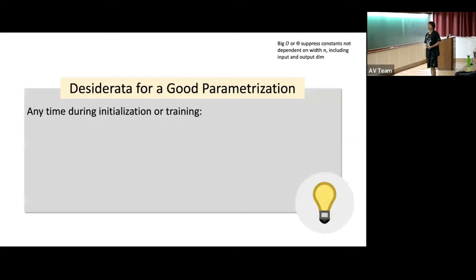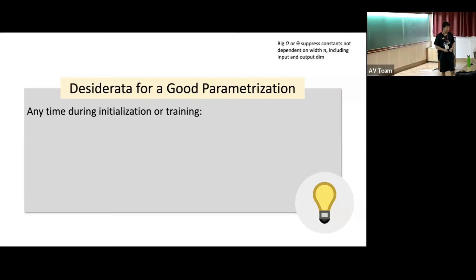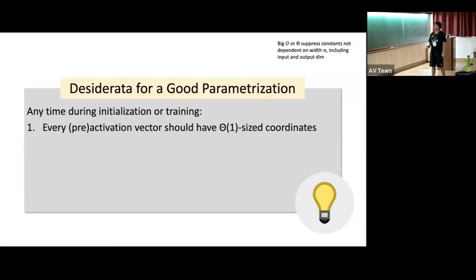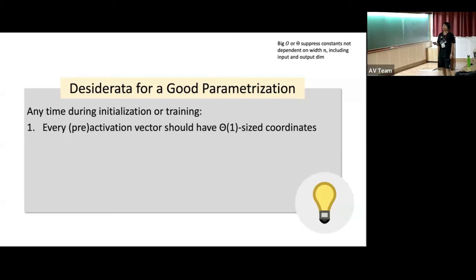The starting point is to consider from first principles what the criteria or desiderata are that would indicate a good parameterization — a good way of scaling your neural network. The first item is that at any time during initialization or training, the activation or pre-activation vector should have constant size coordinates — Θ(1) — meaning constant size as the width n of the network becomes large.